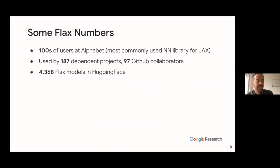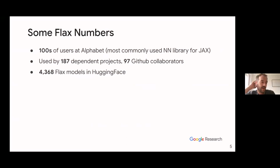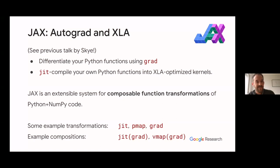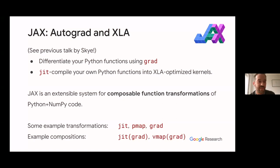Here are some Flax numbers: within Alphabet, we're now the most commonly used neural networking library for JAX. We have 187 dependent projects and 97 collaborators. Hugging Face imports more than 4,000 Flax models. Skye just gave a great introduction to JAX, so please take a look at that as well, but let me quickly explain JAX again for anyone who just tuned in.